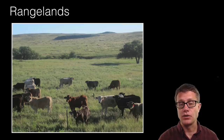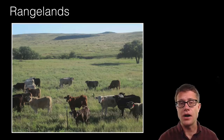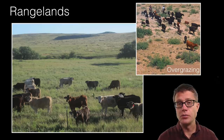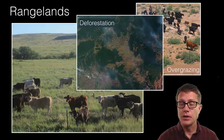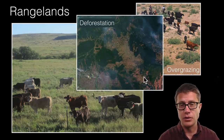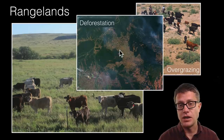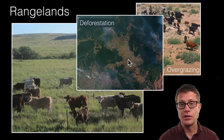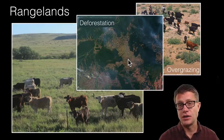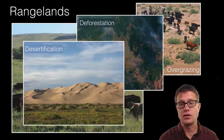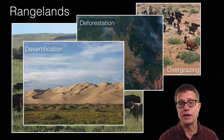Rangelands are areas where we can graze cattle, sheep, and similar animals — generally areas where we cannot necessarily grow crops — so we are able to harvest energy from that area. If we graze too much we have overgrazing, depleting the producers, and often they will not come back. We can also have deforestation: in Brazil, deforestation in the Amazon involves cutting down trees, and since a lot of those soils cannot grow crops, about 90 percent of that deforestation leads to cattle grazing. A combination of overgrazing and deforestation can lead to desertification, as seen with the Gobi Desert, which is growing and once formed is very difficult to reverse.